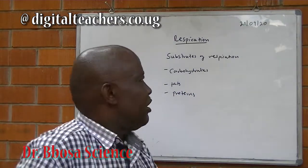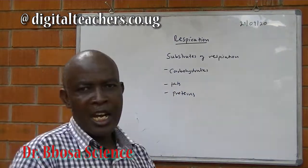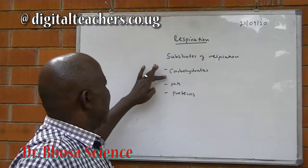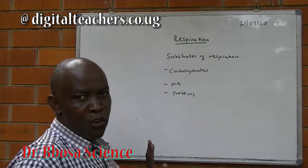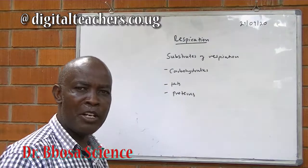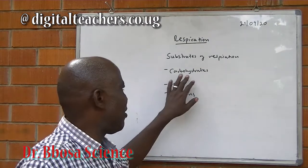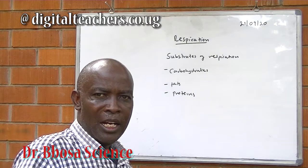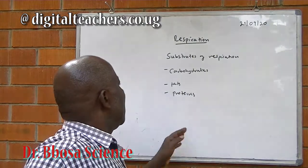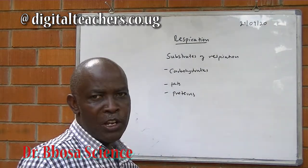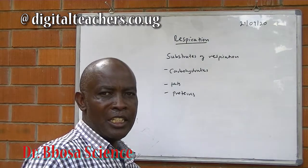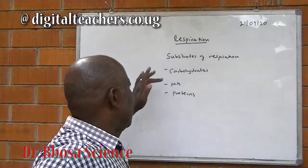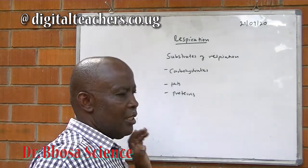Substrates for respiration include carbohydrates as the first choice. The next is fats. Fats produce more energy per unit mass compared to carbohydrates because they contain less oxygen and more hydrogen. Proteins are only used as substrates for respiration in the absence of carbohydrates and fats.